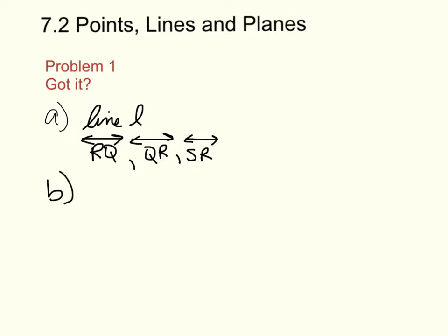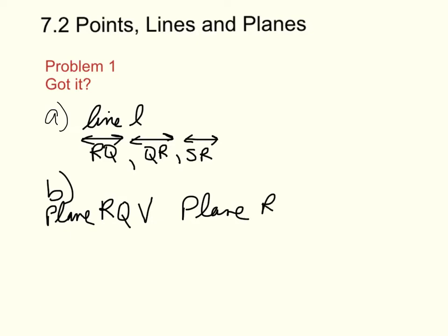Part B: what are two more ways to name plane P? To name plane P, you could use any three points that don't make up a line. So you could call it plane RQV or plane RSV. For part C, what are the names of three collinear points? Collinear points would be point T, Q, and N — those three points are collinear.